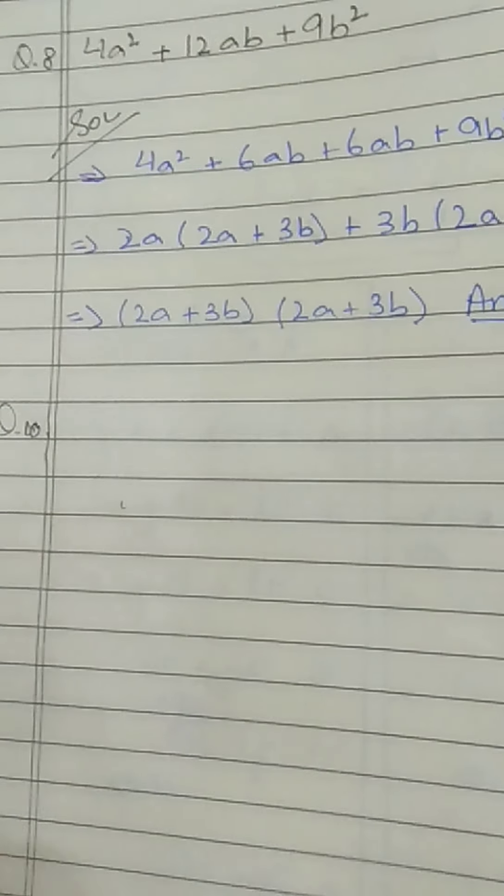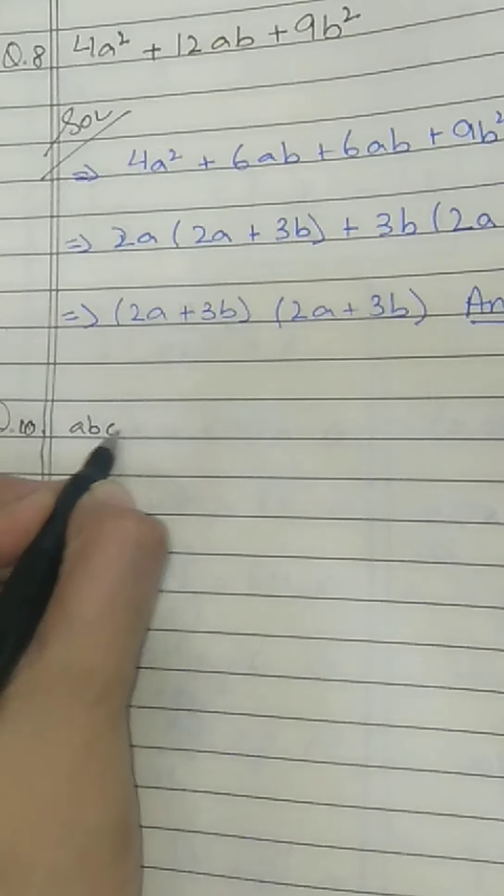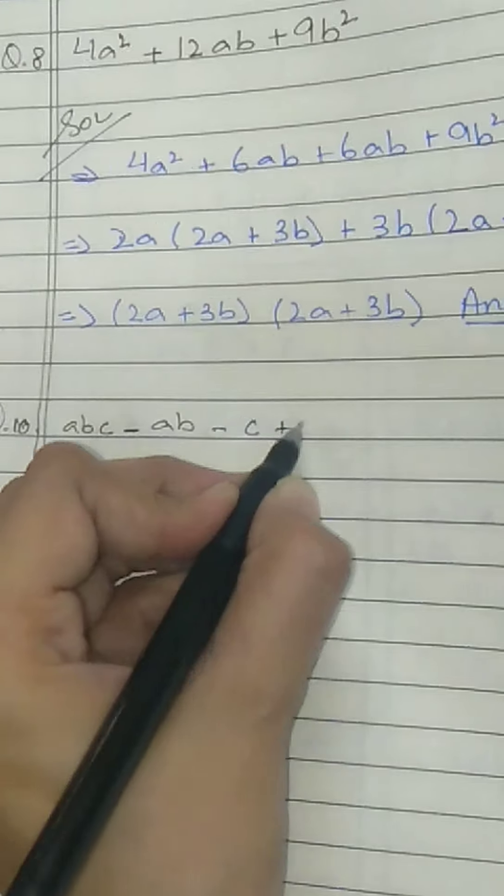Question number 10. What is the question? The question is ABC minus AB minus C plus 1.